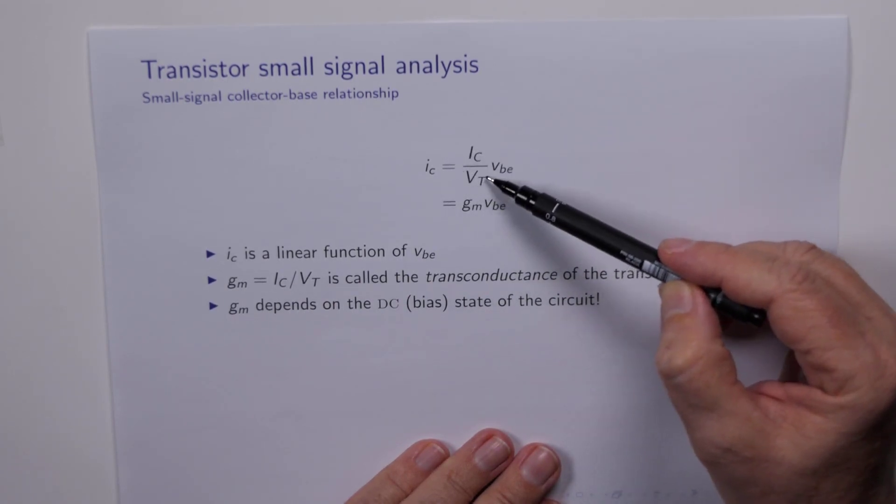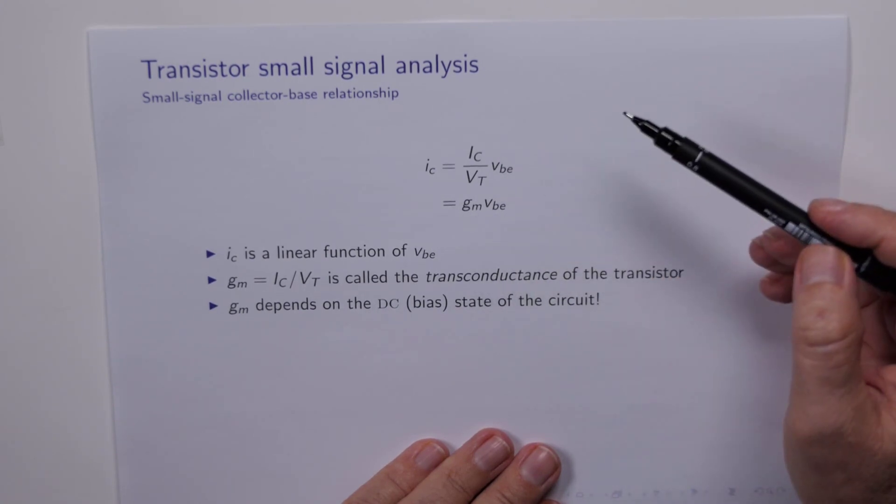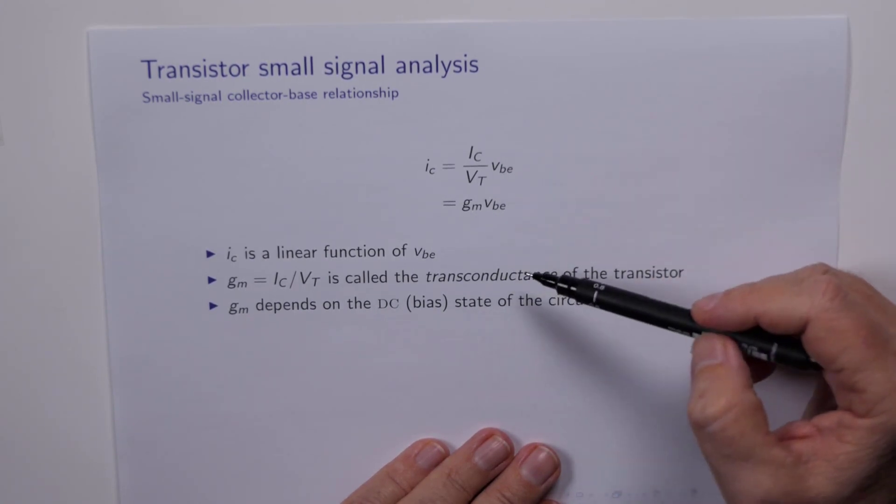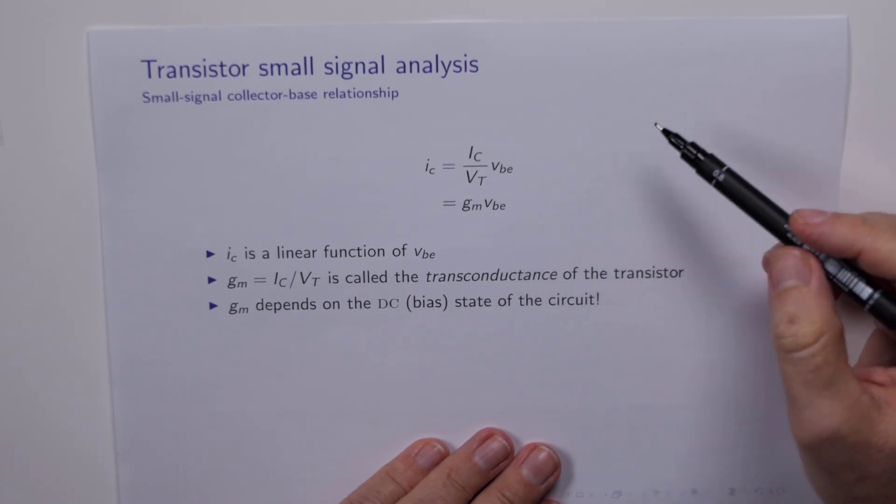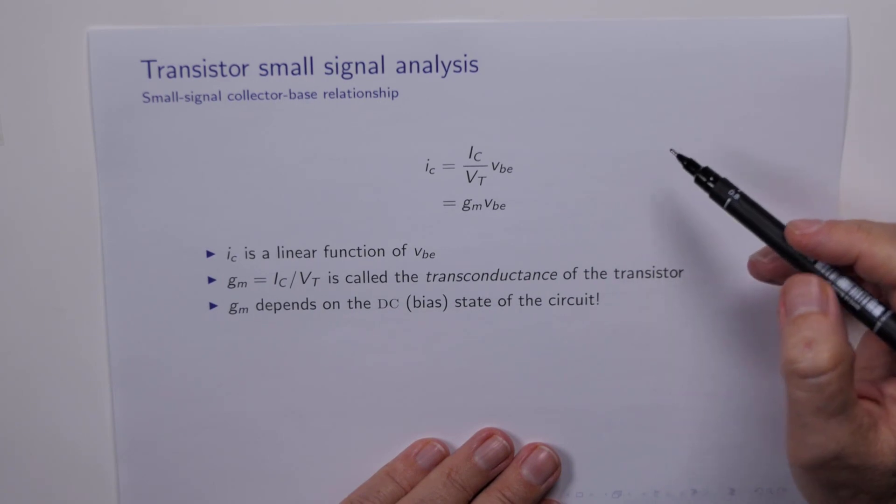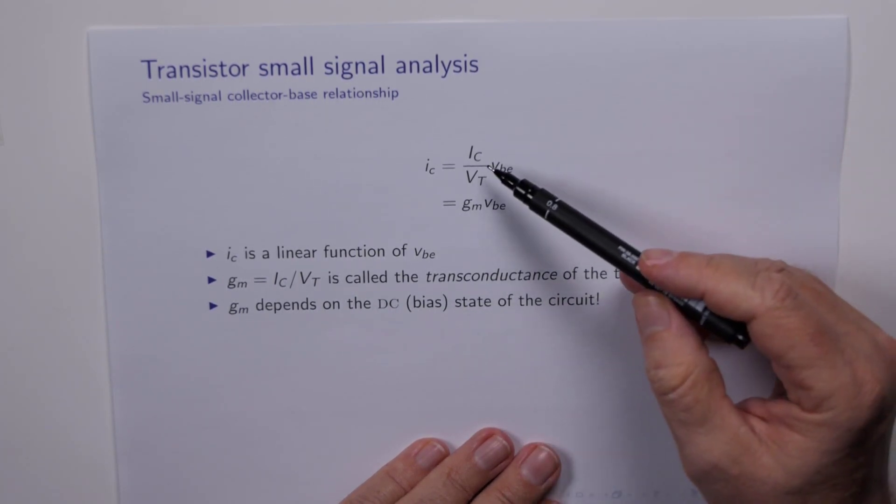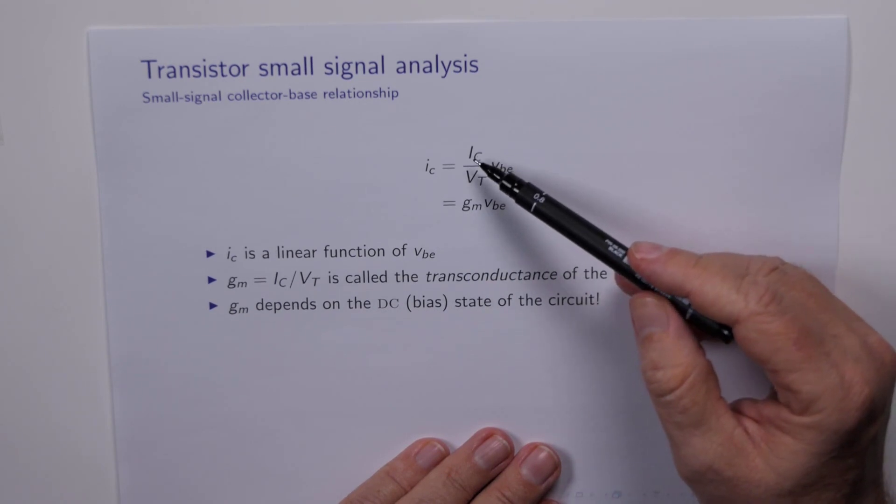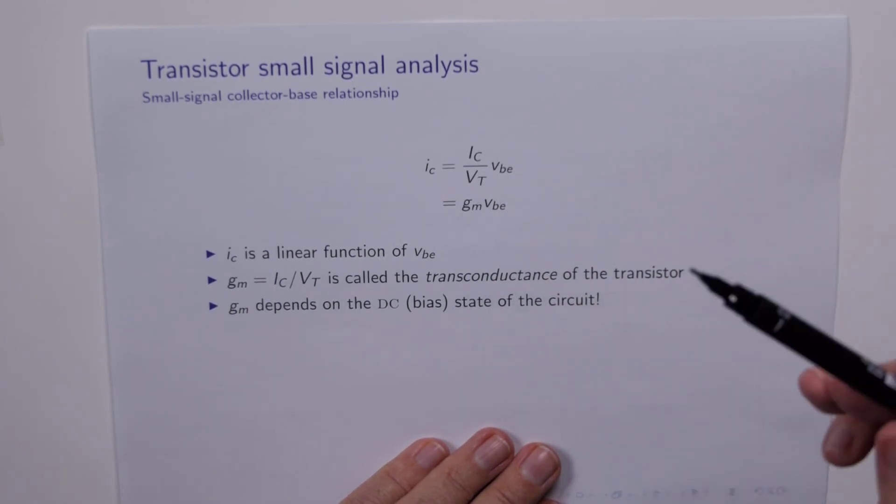This expression here, IC over VT, is given a new name. It's called the transconductance of the transistor. Trans meaning across, in this case across from the input VBE to the output IC, and conductance because it's got units of Siemens, right, amps divided by volts is inverse ohms or Siemens.